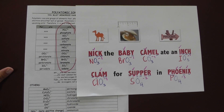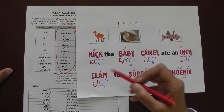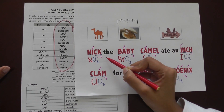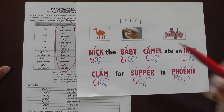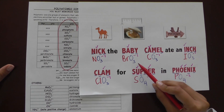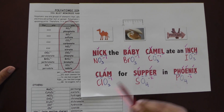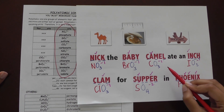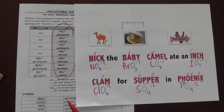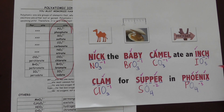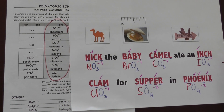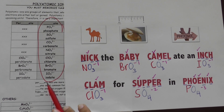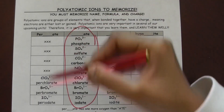Now let's compare with the -ate list. NO3-1 stands for Nitrate. BrO3-1 stands for Bromate. CO3-1 stands for Carbonate. IO3-1 stands for Iodate. Now we've learned all 8.